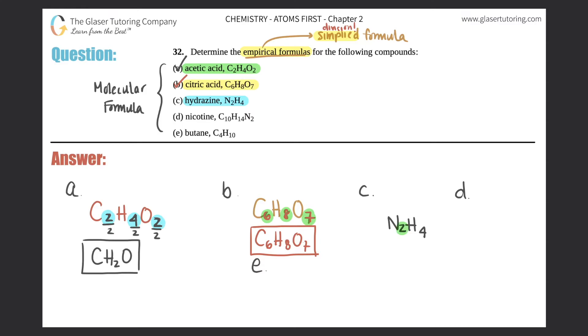Hydrazine is found in rocket fuel and also precursors to pharmaceuticals - super toxic to humans, so stay away from it. N2H4: we have two nitrogens, four hydrogens. Is there a common number between two and four? Yeah, the number would be two. When I divide both by two, it would be N1 (we don't write that) and H2.